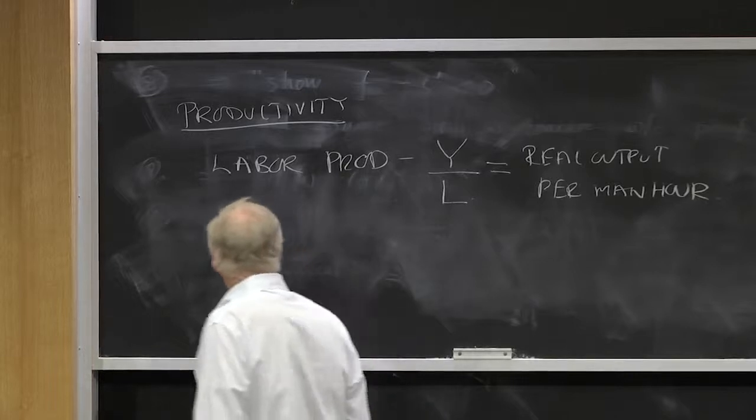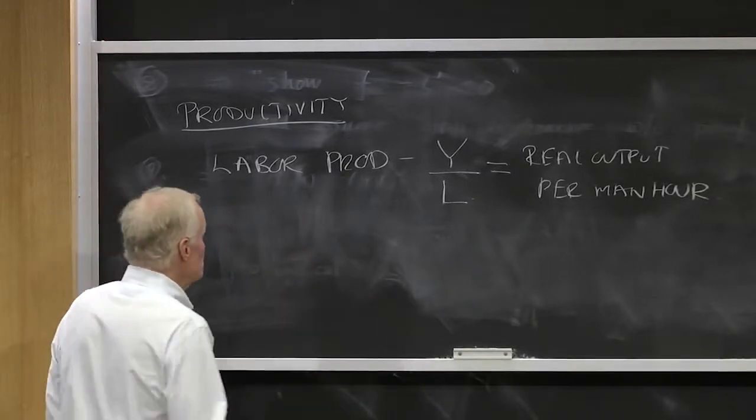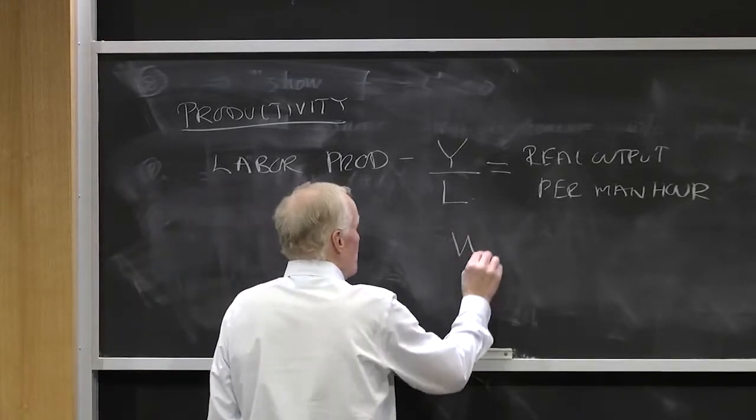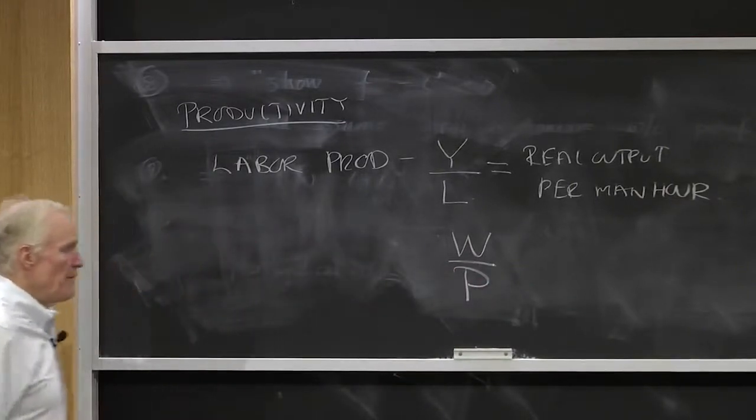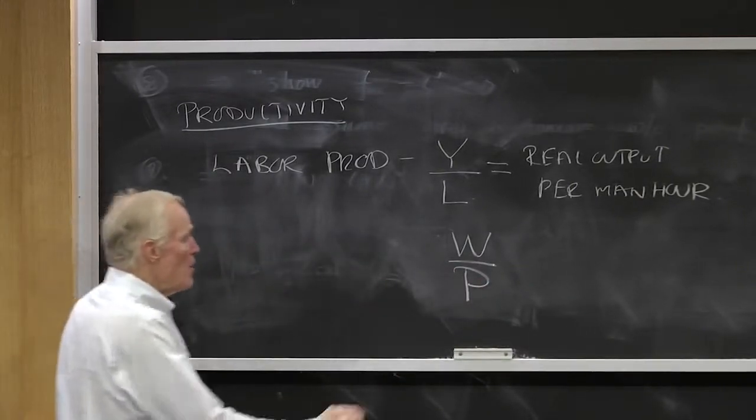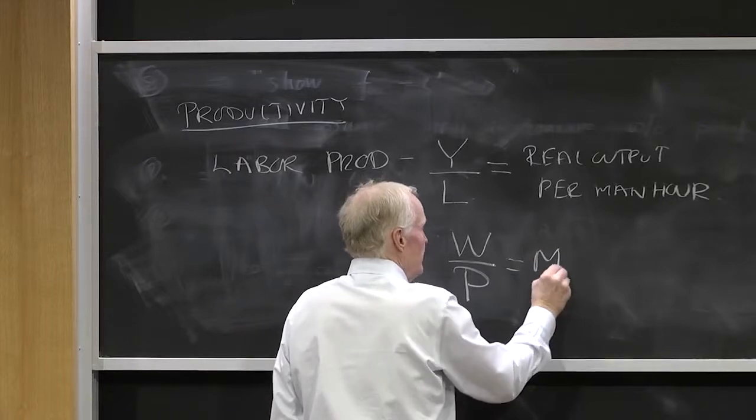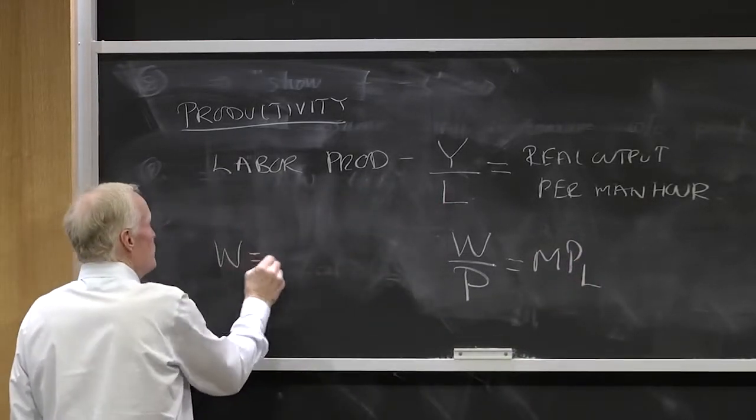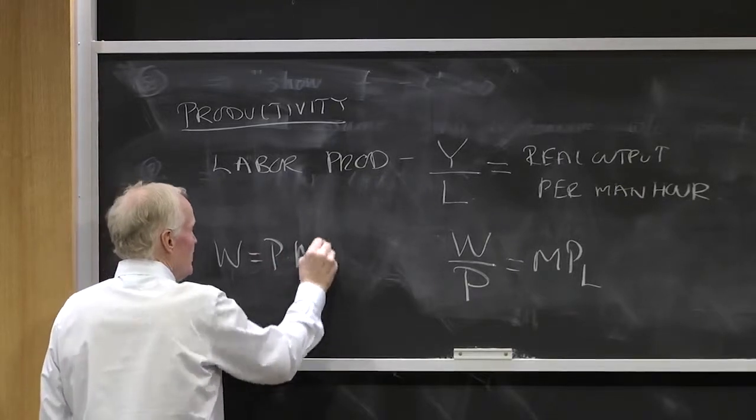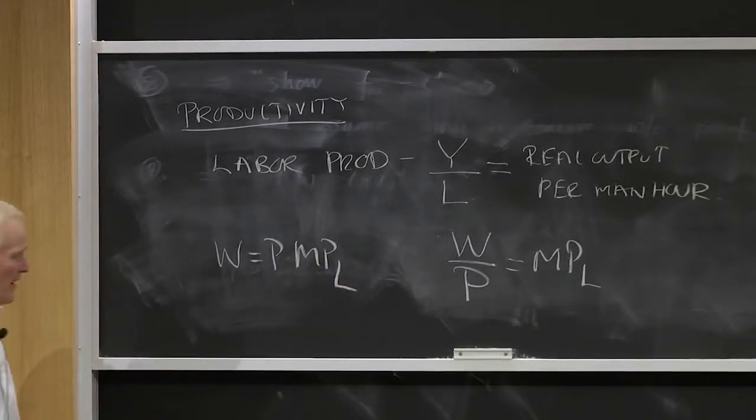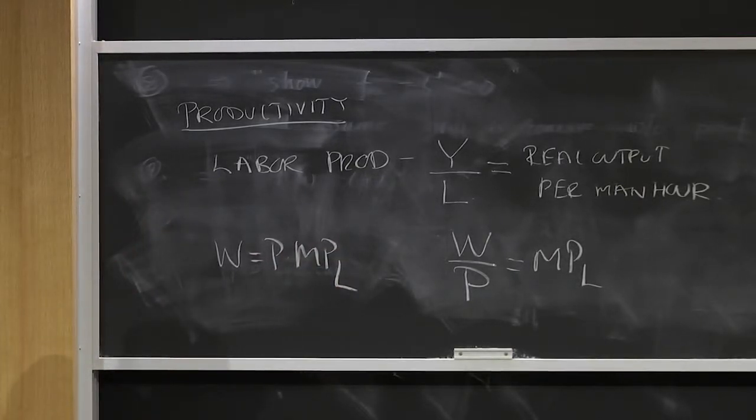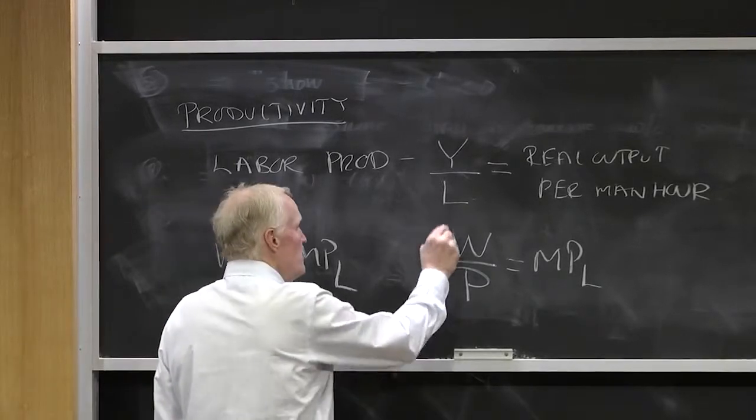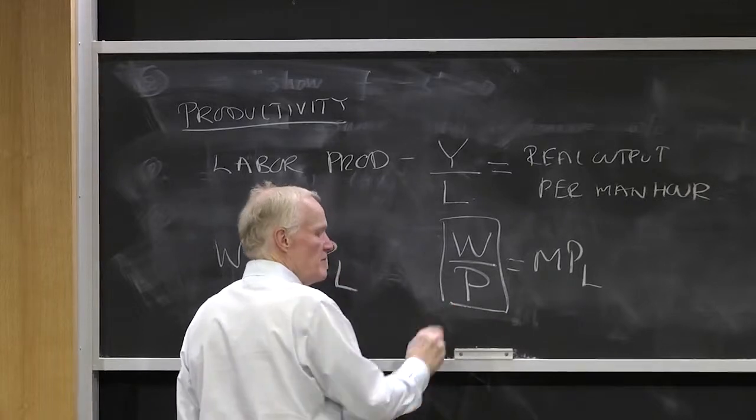There's another measure of labor productivity, of course, which is W over P, because that would be equal to the marginal product of labor. In a competitive market, the wage equals price times the marginal product of labor. So that's the competitive market profit-maximizing condition for a firm. Therefore, W over P is the marginal product of labor.